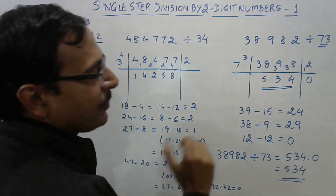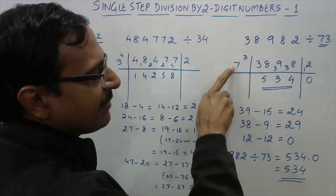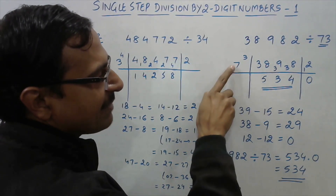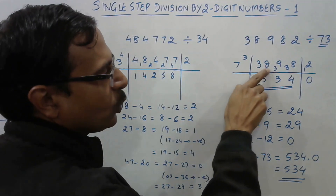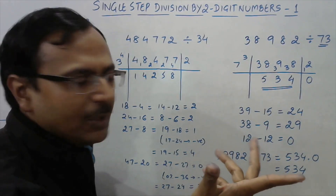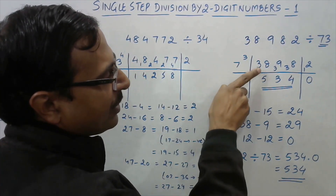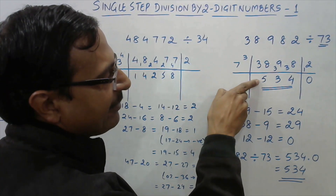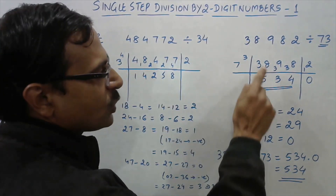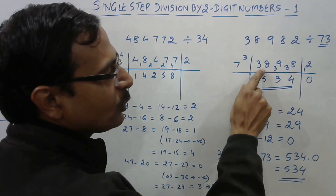Grouping can be done like this — 7 is the divisor here. 7 does not divide 3 since 3 is less than 7, so I have to take 2 digits first. That is the traditional division approach. Now, 7 multiplied by 5 gives us 35, which is very close to 38. So 38 minus 35 gives you a remainder of 3.